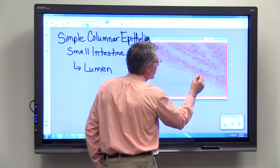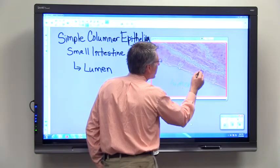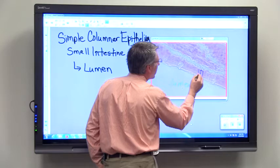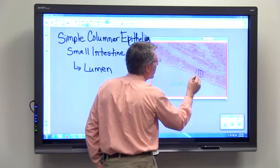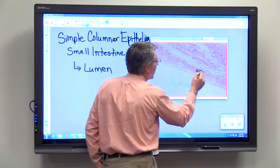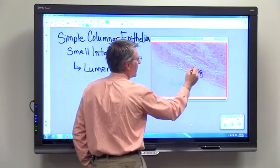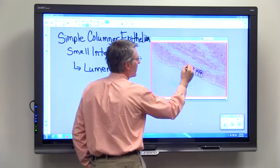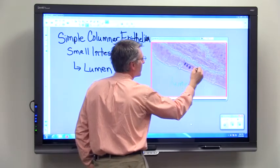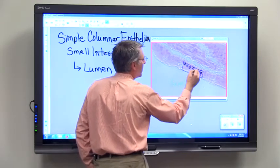I want you to notice here in particular that when we look at these cells, the nuclei are all found in the same layer. Here's another nucleus, here's a nucleus, here's a nucleus, here's a nucleus.